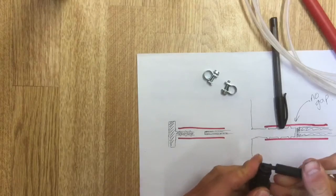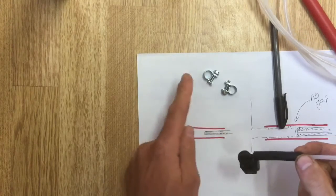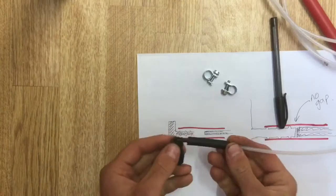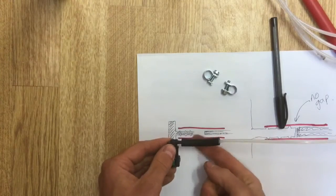We could join these like that, just put a jubilee clip on either side, one of these little clamps and we kind of look like this picture at the side.